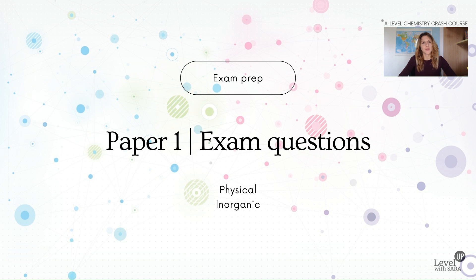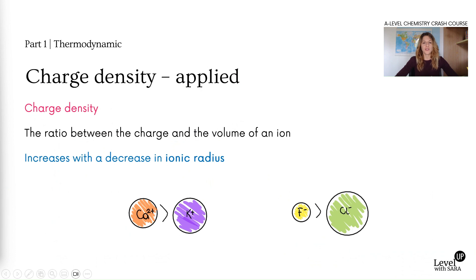Hi and welcome to this video where we look at one key concept that comes up very often in A-level paper one chemistry. We will look at the concept of charge density. Charge density is the ratio between the charge and the volume of the ion.